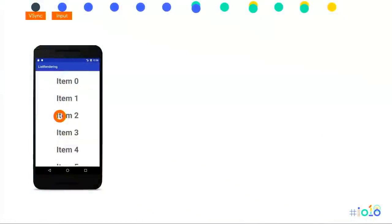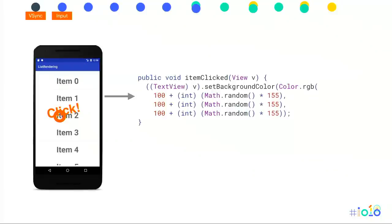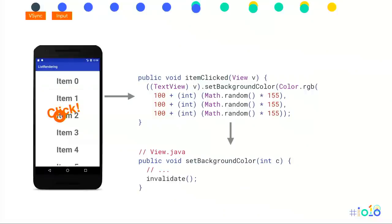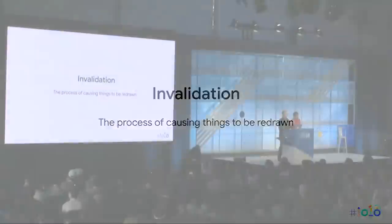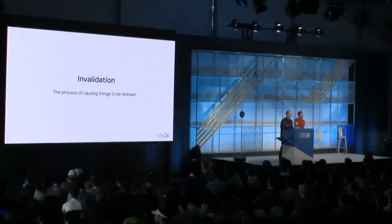So what happens? The user clicks, there's a VSync operation. We process input during the input phase and notice this is a click — first a down, then an up, processed as a click. That ends up in an item click method where we set the background color on this item to a random color. That gets sent to setBackgroundColor in View.java, which sets the color on the background drawable and then calls the invalidate method. Invalidation doesn't actually redraw the views — it tells the view hierarchy that something needs to be redrawn.